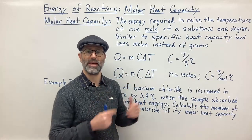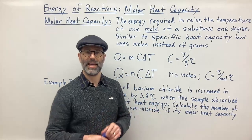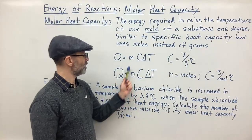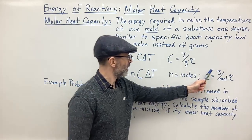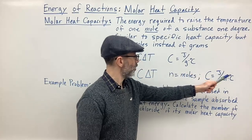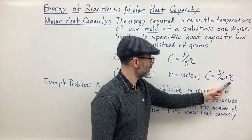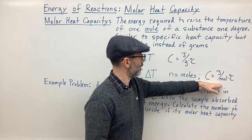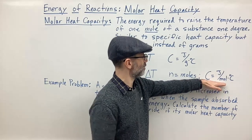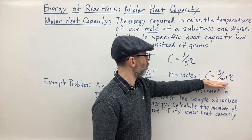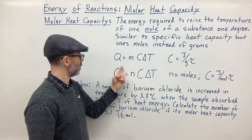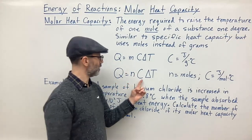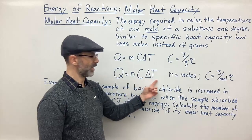When we use molar heat capacity, the units are joules per mole per degree Celsius. Since we have moles, our equation is a little different — instead of multiplying by mass in grams, we multiply by the number of moles. So the new equation is: q, the quantity of heat, equals the number of moles N multiplied by the molar heat capacity multiplied by the change in temperature.